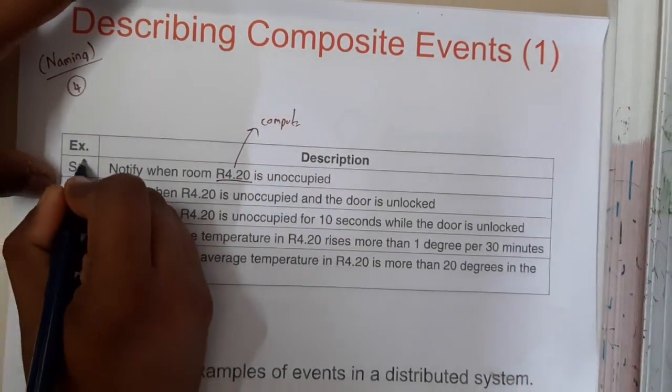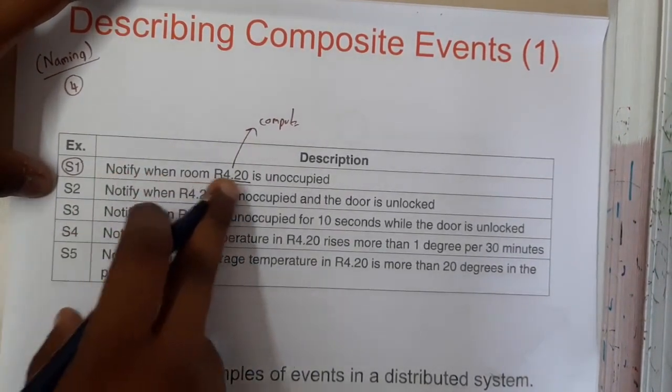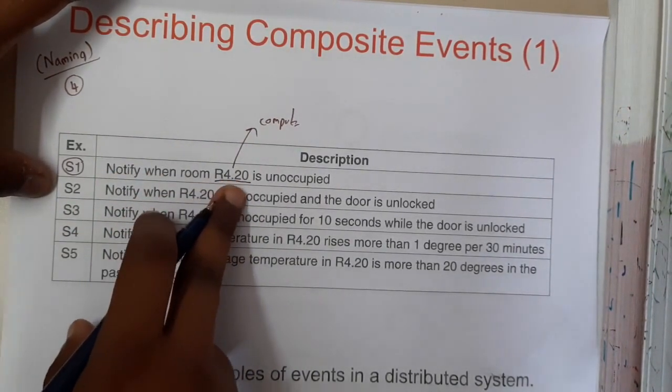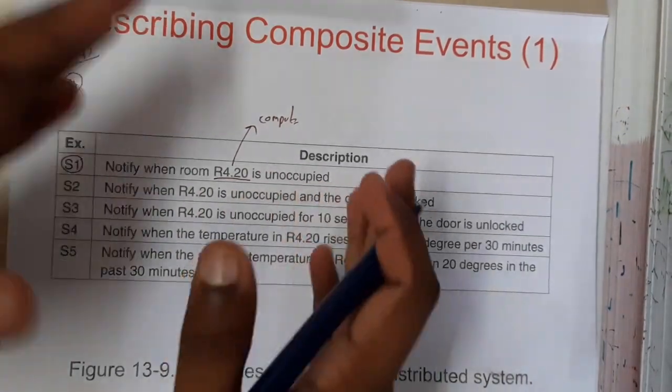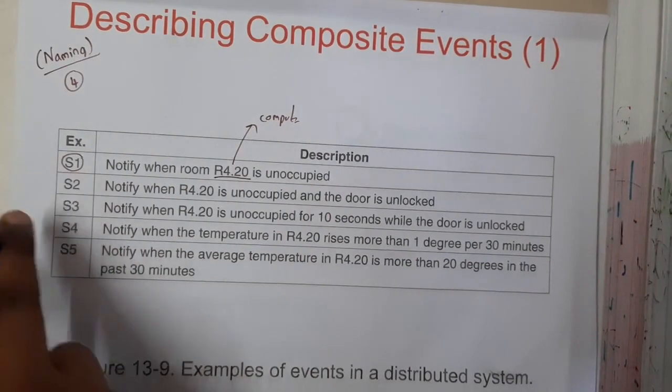Whenever event S1 occurs, you are notifying when room R4.20 is unoccupied. So the room which you have allocated for that system is empty, that's what it is indicating with S1.